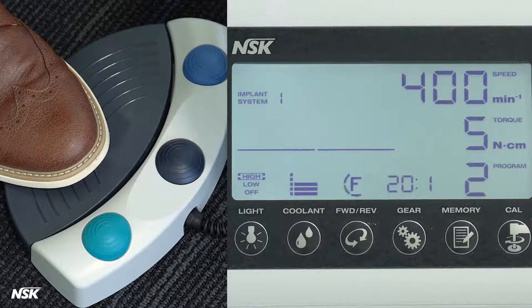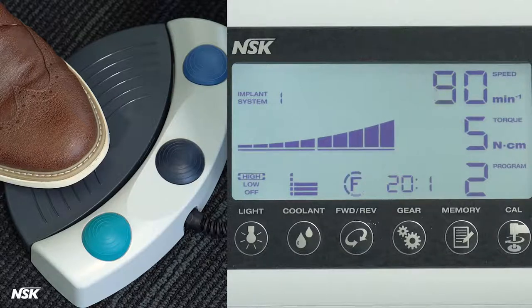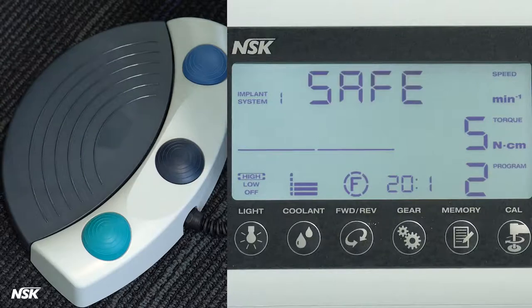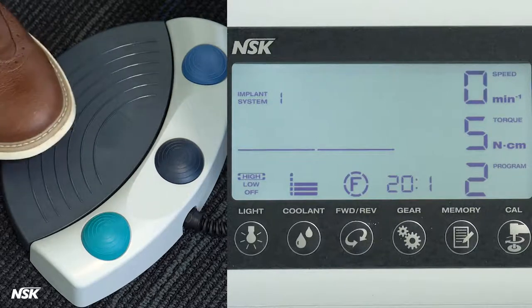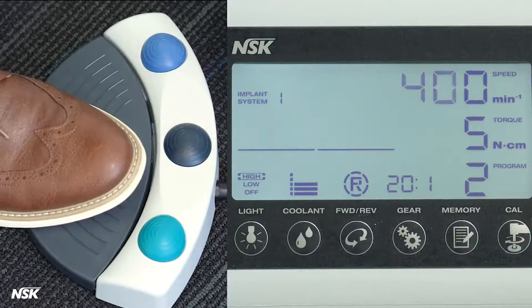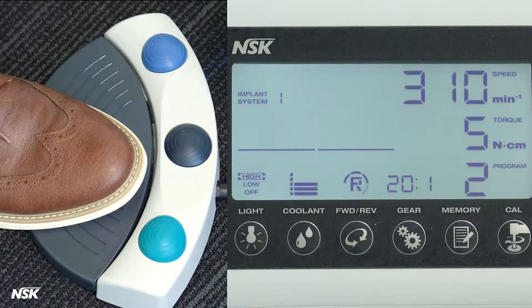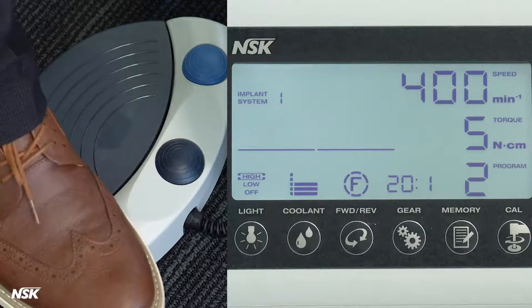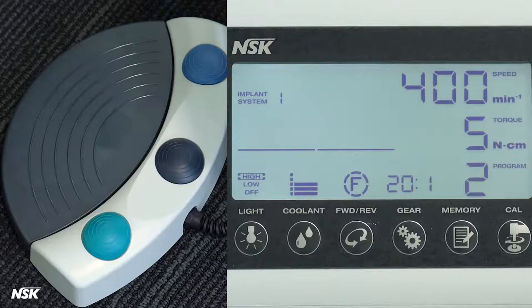If at some point in a procedure a drill becomes stuck in the bone and the torque exceeds the set value in the program, the error message safe will appear on the panel. You will hear a beep and the device will stop. Tap on the speed pedal to clear the error. Then press the green button on the foot control to change the rotational direction and step on the speed control pedal again to release the drill. Don't forget to change the rotational direction back to forward using the touch panel or by pressing the green button again. Now you're ready for another round of drilling.